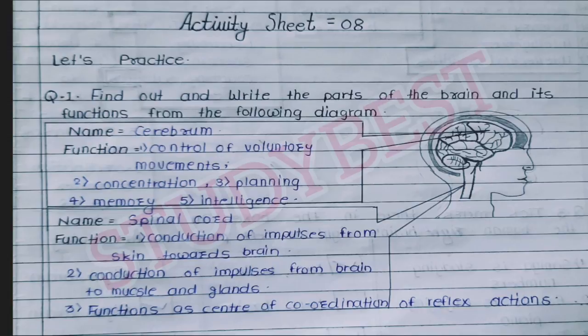Draw the diagram in your notebook and write the names and functions. The first name is Cerebrum. Its functions are: first, control of voluntary movements; second, concentration; third, planning; fourth, memory; fifth, intelligence. Next, the name is Spinal Cord. Its functions are: conduction of impulses from skin towards the brain, conduction of impulses from brain to muscles and glands, and functioning as a center of coordination of reflex actions.